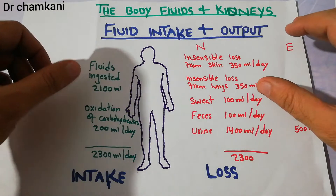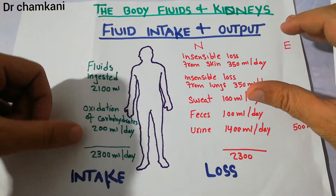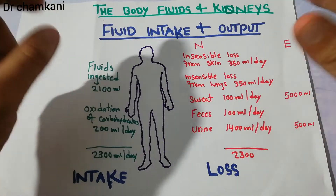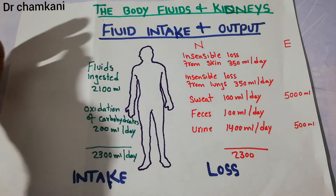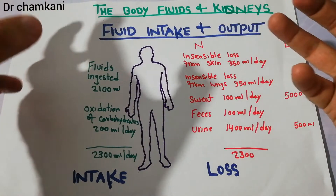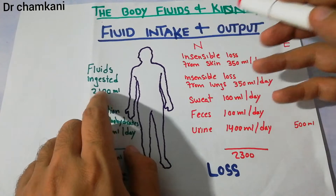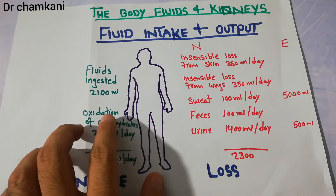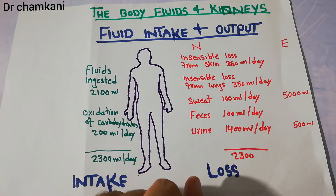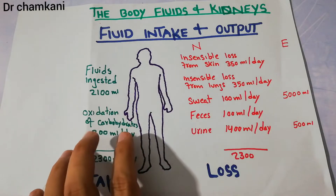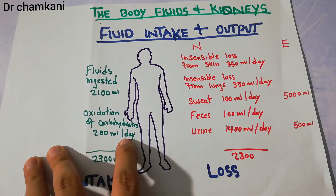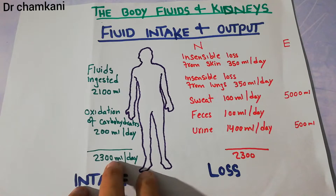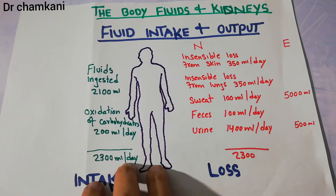The daily fluid intake includes two important components. First is the fluid ingested directly — the amount of fluid taken in the form of water, tea, coffee, juices, or any other thing consumed directly, which is around 2100 ml per day. Second is the fluid produced from oxidation of carbohydrates — the water generated due to breakdown of carbohydrates — which is around 200 ml per day. So the total fluid intake per day is around 2300 ml, or 2.3 liters per day.